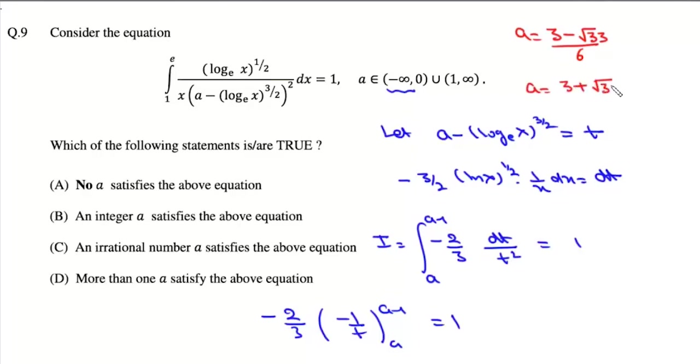Now under root thirty three is greater than five, so this value will be negative, it'll lie in this interval so this value is accepted. And three plus under root thirty three, again under root thirty three is greater than three, so this value is greater than one.